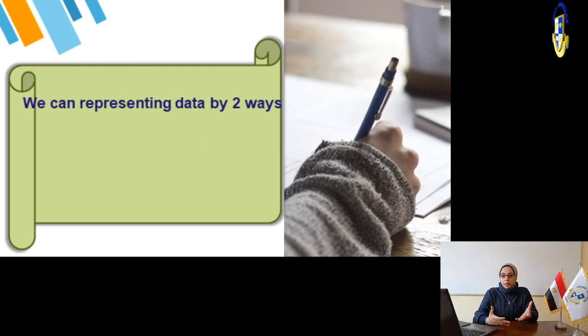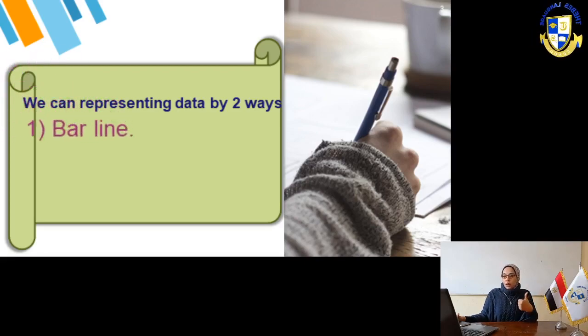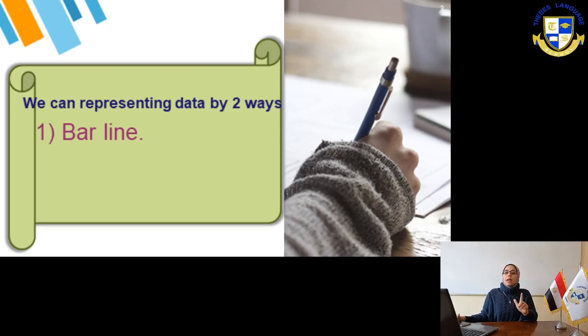Then, this is how we collect data. How do we represent data? We have two ways to represent data. The first one is bar line. We can represent data by a bar line. And the second is double bars. This is for this year - bar and double bar.